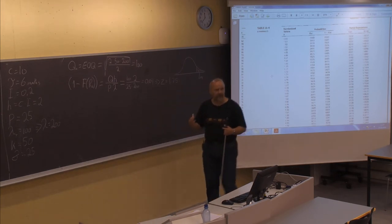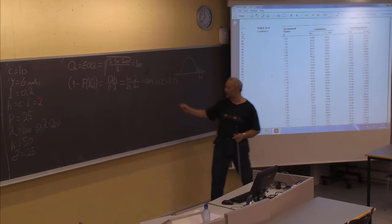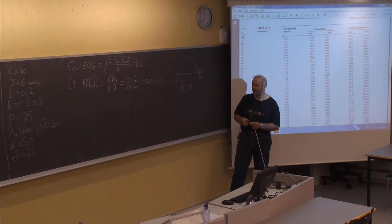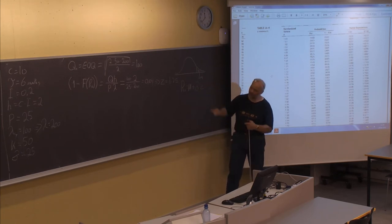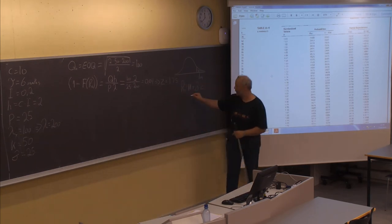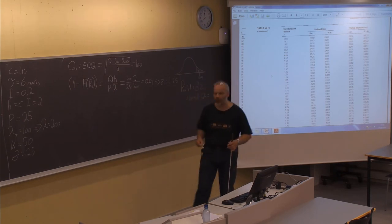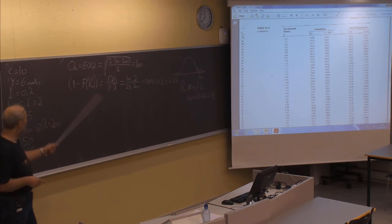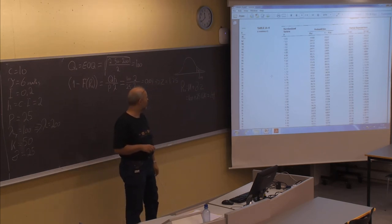With Z = 1.75, which gives a 4% probability of stockout, we can easily find the corresponding R value. We know that R equals the mean demand in the lead time, plus the standard deviation multiplied by Z. In this case: R = 100 + 25 × 1.75 = 144. So the policy so far is: order 100 items when you have 144 items left in stock.